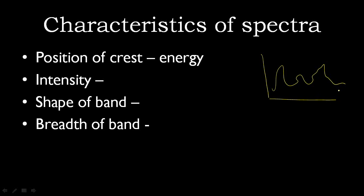So what are the various characteristics that we see in a spectra? The first one is the position of the spectra. What does the position of a crest mean? You can see there's a peak here. Any spectra won't be a perfect wave — so we have certain peaks, some lower and some higher. These give information about the energy that is being absorbed.